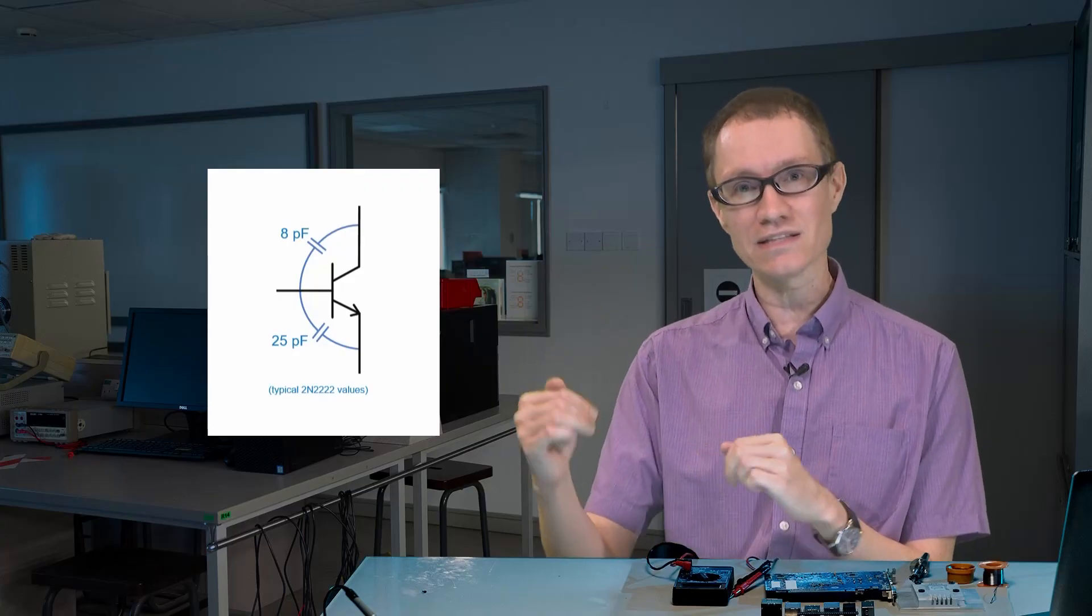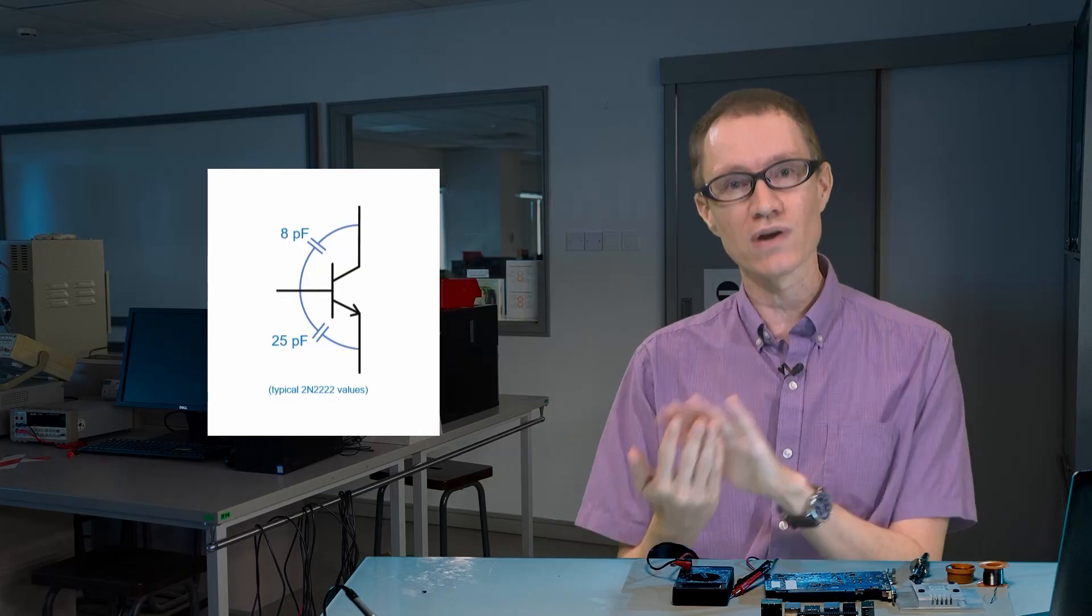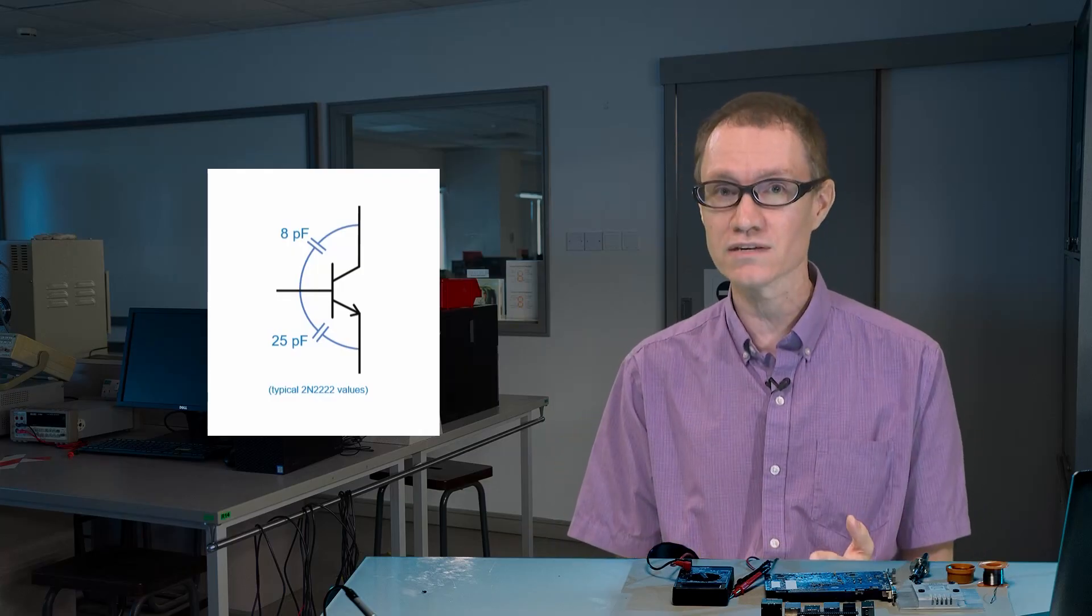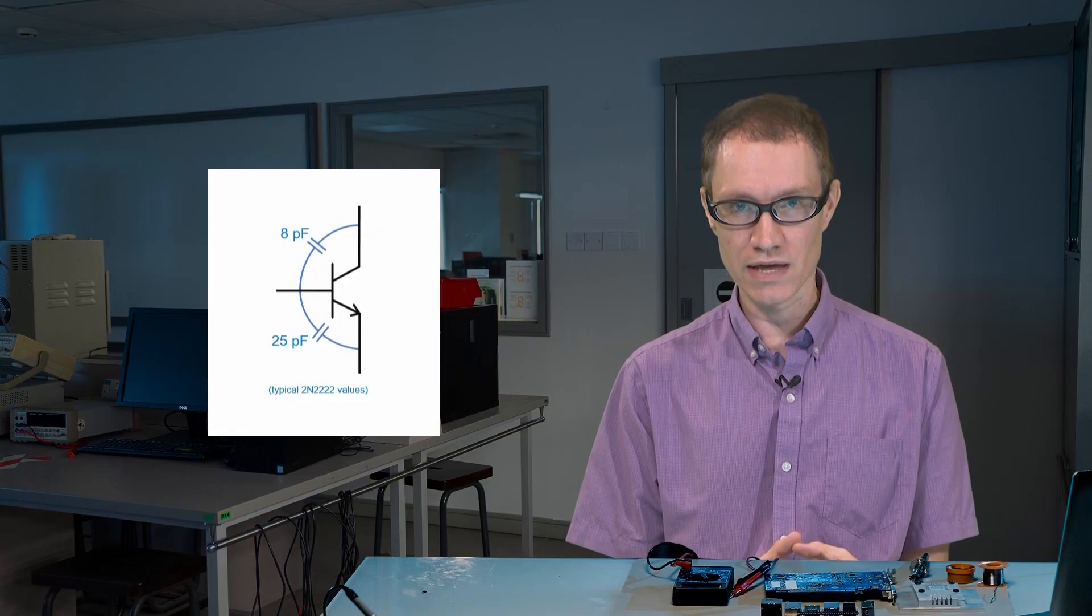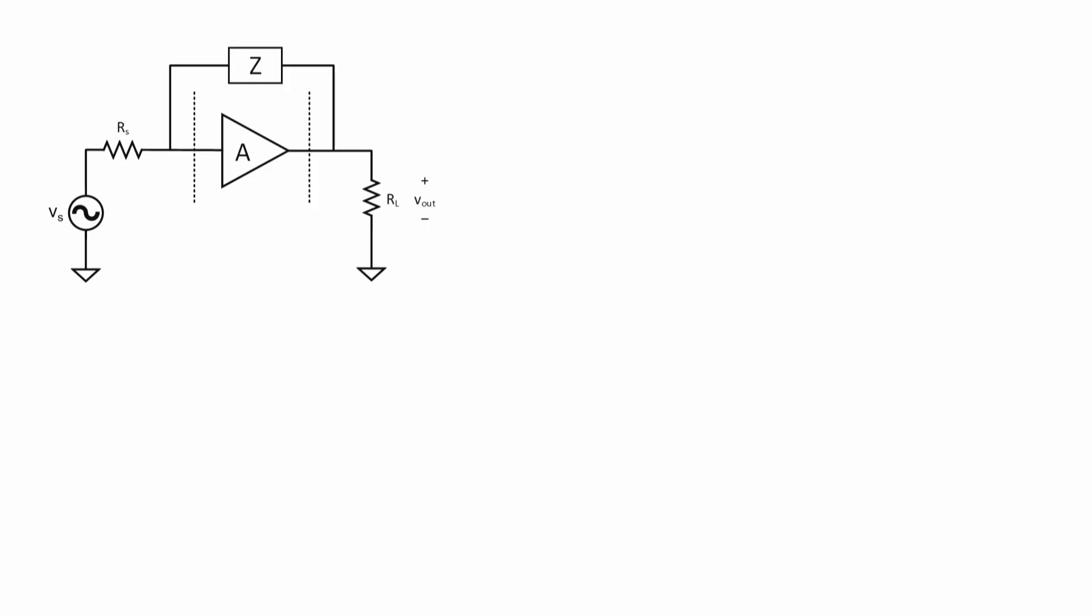if you use a common emitter configuration and you have the input at the base, then the output's going to be inverted relative to the input if you take it at the collector. That means that the Miller Effect comes into play.